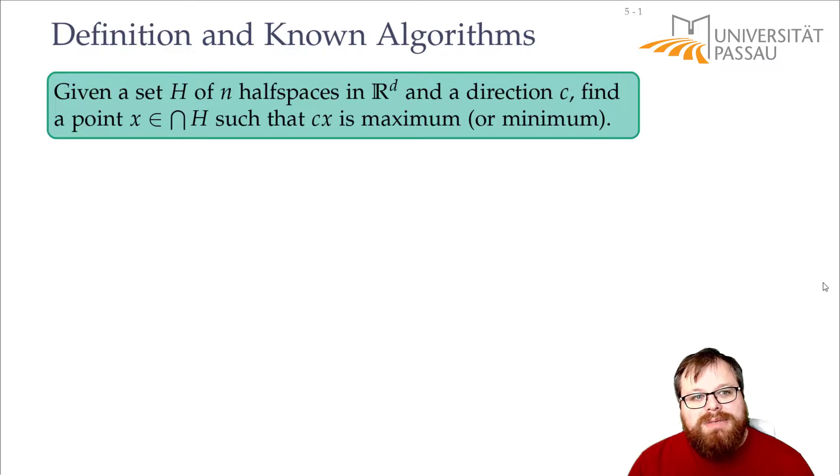In a geometrical sense what we have is a set of half planes and a direction. This is very similar to what we had in the convex hull where we had a set of half planes we wanted to intersect them and then that gives us the convex hull of the point set.